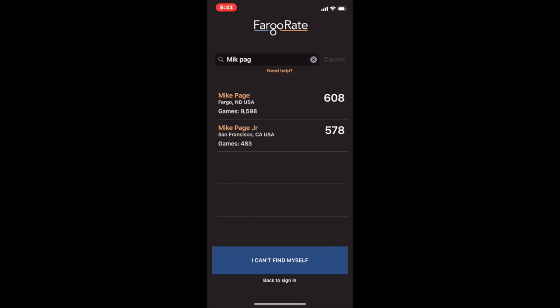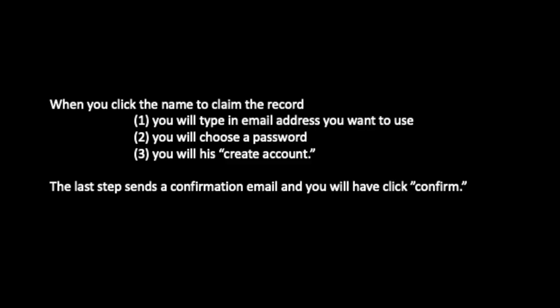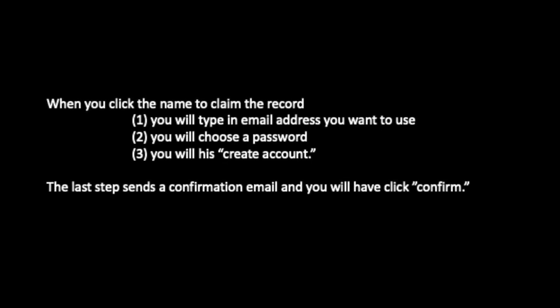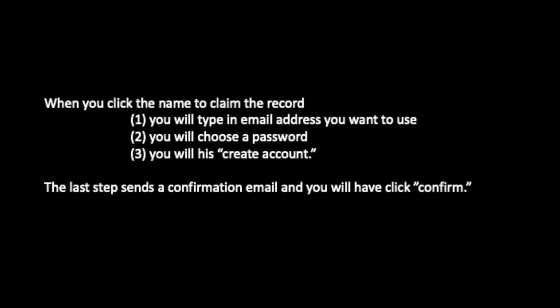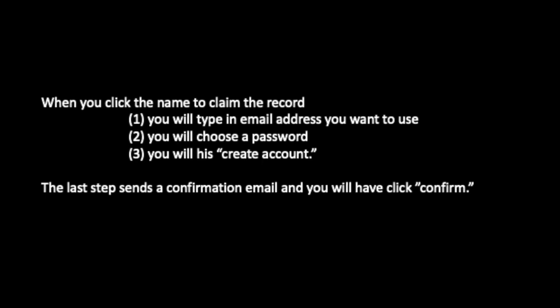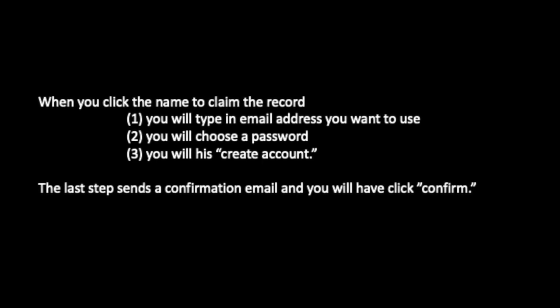When you find the right record, you just tap on the name and it will ask you if you want to claim that record. You'll type in an email address and then choose a password, because this is a new account. Then you will hit create account.